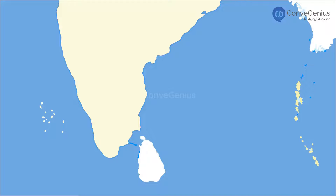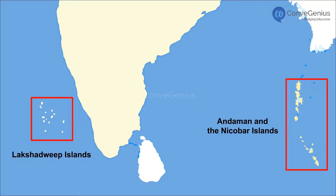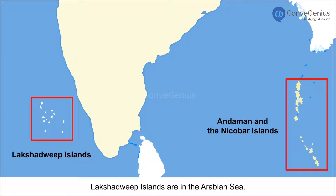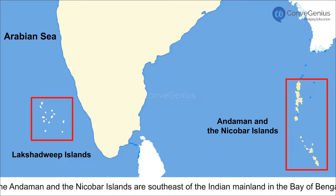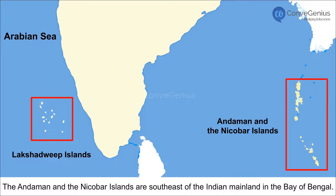India has two groups of islands: the Lakshadweep Islands and the Andaman and Nicobar Islands. The Lakshadweep Islands are in the Arabian Sea. The Andaman and Nicobar Islands are southeast of the Indian mainland in the Bay of Bengal.